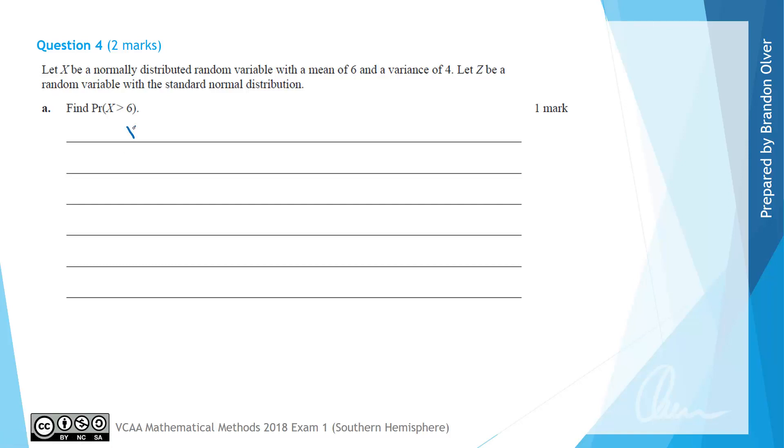To summarize, we know that X is normally distributed with a mean of 6 and a variance of 4, which is the same as a standard deviation of 2 squared. A normal distribution would have a bell shaped curve that would look something like this, and we know that this value is the mean of 6 and that there is a standard deviation of 2 or a variance of 4, and the probability that X is greater than 6 is this region here.